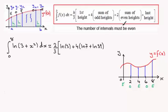Then it's plus twice the sum of the even heights. Remember these are the heights in the middle between the first height and the last height. So we've only got one here when x is 4. So when x is 4 you're going to get 4 squared is 16 plus the 3 which is 19. So 2 times the natural log of 19.